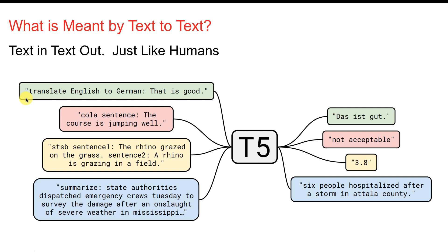The model has to literally learn from the data that the words 'translate English to German' mean it's going to translate. Then you've got 'English' and 'to German' — 'that is good' becomes 'das ist gut.' That's a pretty good translation, probably a poor pronunciation. I know some of my subscribers are native German speakers.